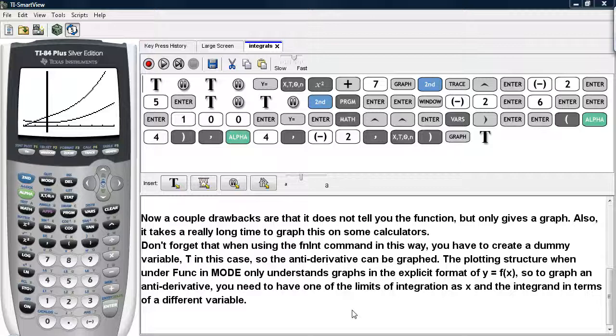Don't forget that when using the fnint command in this way, you have to create a dummy variable, t in this case, so the antiderivative can be graphed. The plotting structure, when under the func option in mode, only understands graphs in explicit format of y equals some function of x.